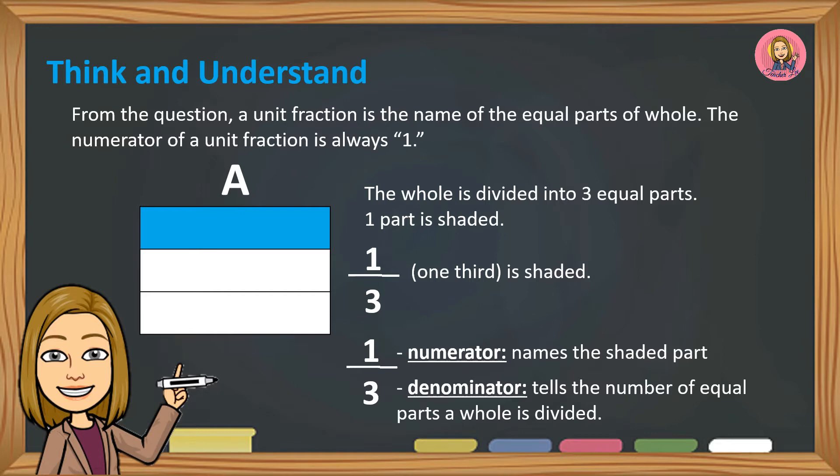One is the numerator and three is the denominator. One third. The numerator names the shaded part. The denominator tells the number of equal parts a whole is divided.